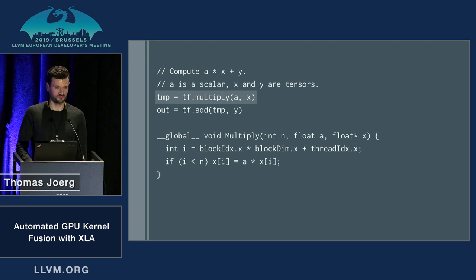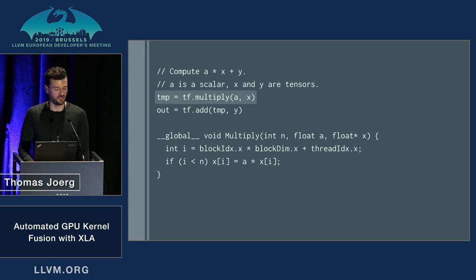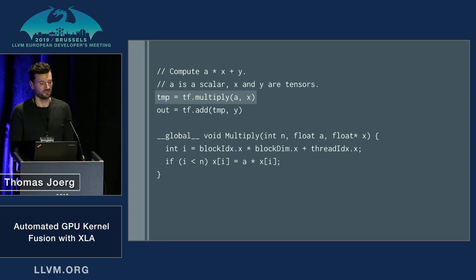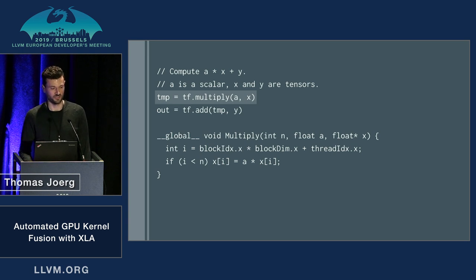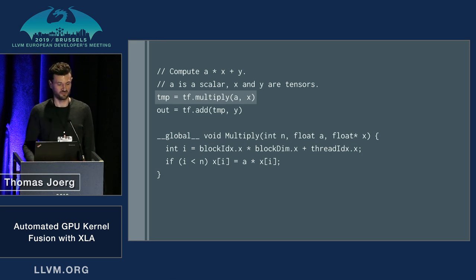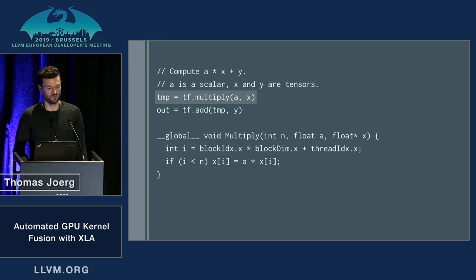If you want to offload one of these operations to your GPU device, the code might look something like this — this is CUDA C++ used for NVIDIA GPUs. The idea is that the body of this function is being run by many threads on the GPU in parallel. Each thread will grab one piece of data, multiply it with this constant, and write it back to memory. In CUDA, these threads are organized in a launch grid with blocks, and you multiply the block ID by the block dimension plus the thread ID within the block to figure out each thread's index.